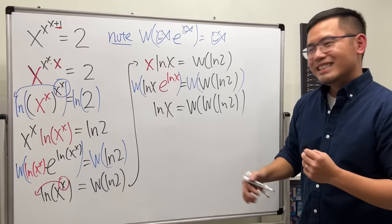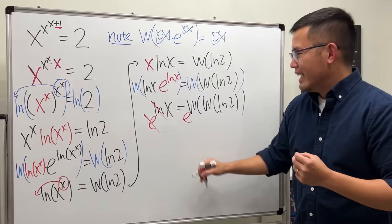Lastly, just do e to the power, e to the power, cancel out very nicely. x equals e to the Lambert W function of the Lambert W function of ln 2. Just like that.